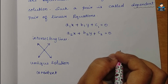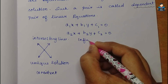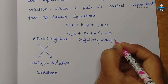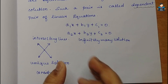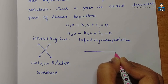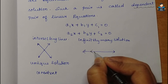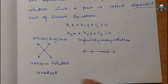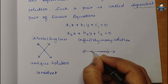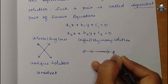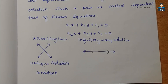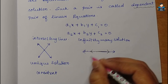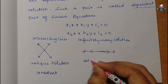The solution is one solution (unique solution) for intersecting lines. For coinciding lines - where two lines are actually the same line sharing the same points - there are infinitely many solutions, and this is also consistent.